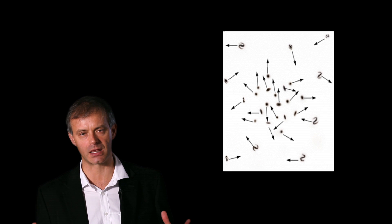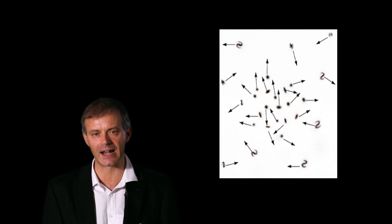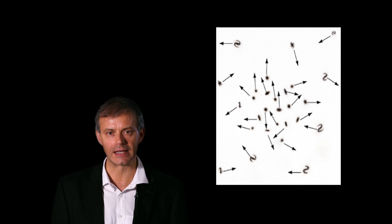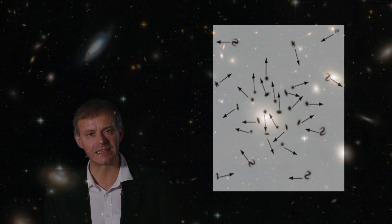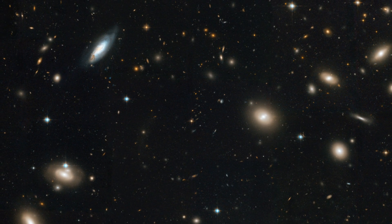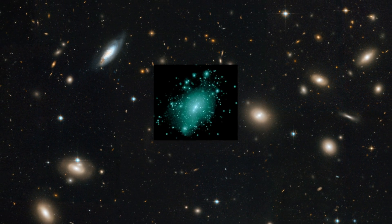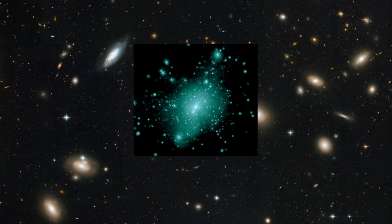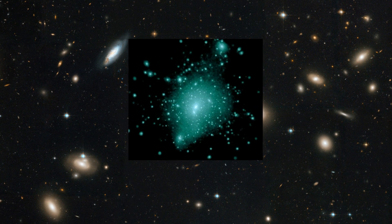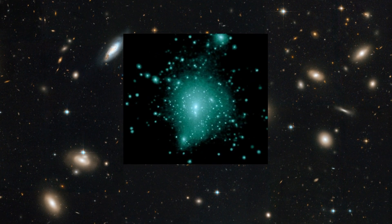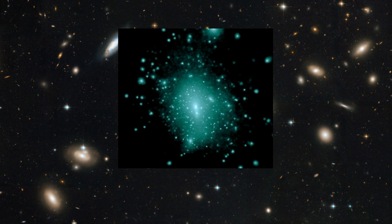With those speeds, galaxies should scatter all over space and not remain attached to the cluster. But they were kept in the cluster. For this to happen requires some kind of invisible matter, later called dark matter, exerting a gravitational influence to hold together the galaxies in the cluster as a bound system.